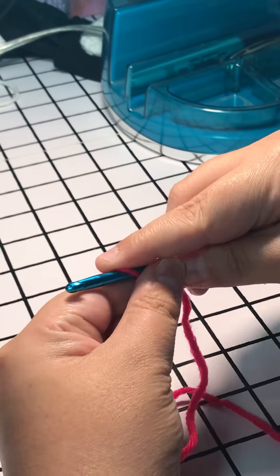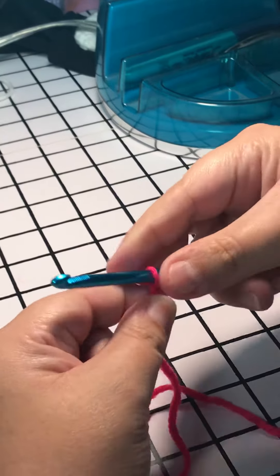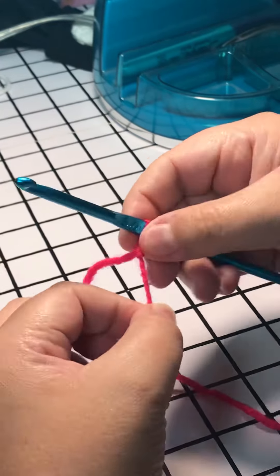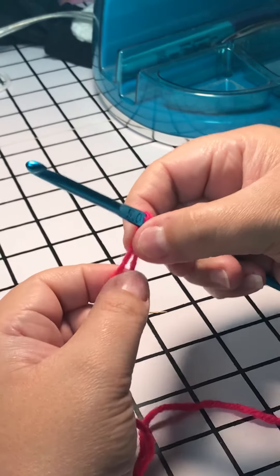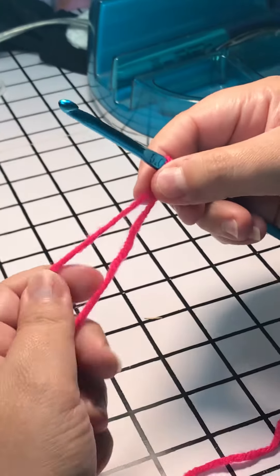Grab it with my hook and I pull it through the loop on my hook, and then when you pull it up it makes a knot at the bottom. It feels like you have two strands coming out of the bottom of that loop.